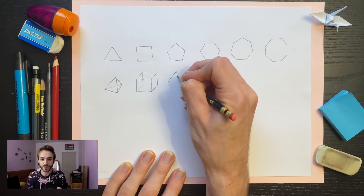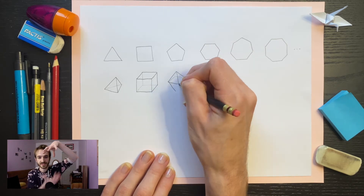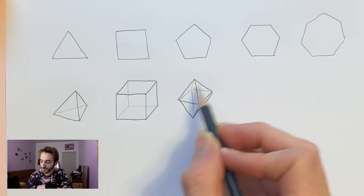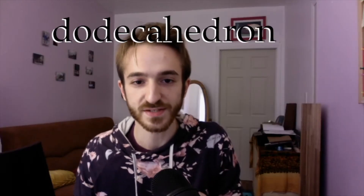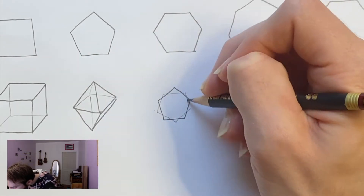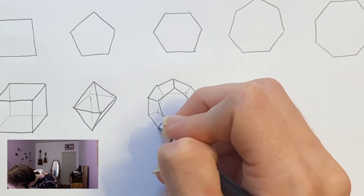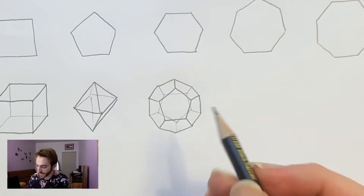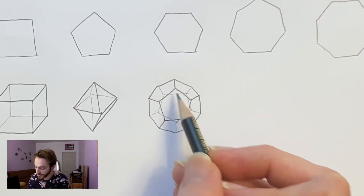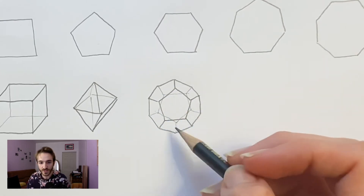A slightly less well-known one is the octahedron. You get it by taking two square pyramids and stacking them on top of each other — it has eight sides and they're all perfect triangles. Now where it starts to get fun: the next one is the dodecahedron. It has 12 perfect pentagons clicking together with three around each corner. They wrap around to the back and the whole thing works out perfectly.